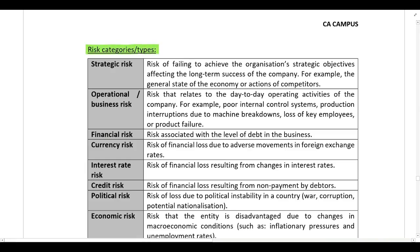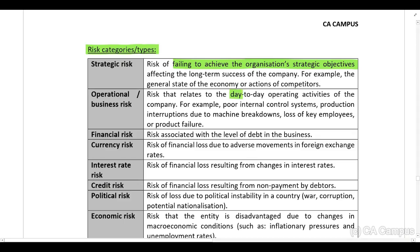The first risk type or category is strategic risk — the risk of failing to achieve the organization's strategic objectives, affecting the long-term success of the company. Examples include the general state of the economy or actions of competitors. Operational or business risk relates to the day-to-day operating activities of the company — for example, poor internal control systems, production interruptions due to machine breakdowns, loss of key employees, or product failure.